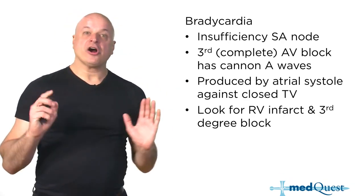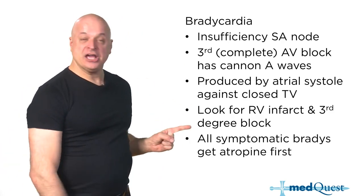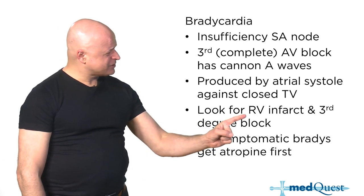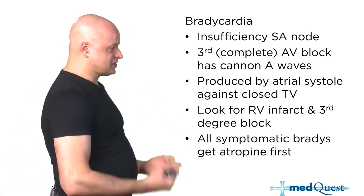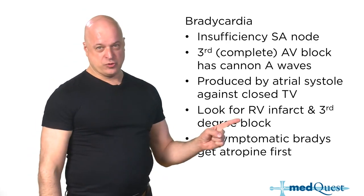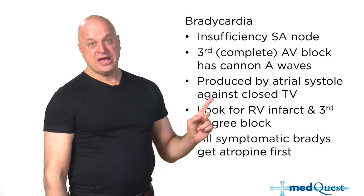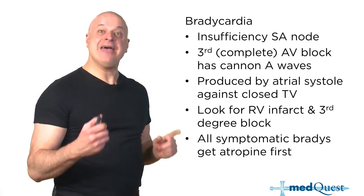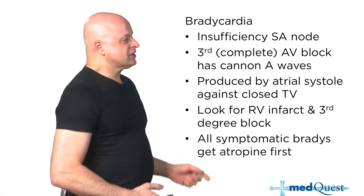Bradycardias are always treated with atropine if you're symptomatic. Why look for third degree AV block with RV infarction? Because they have the same arterial supply — the right coronary supplies the right ventricle, the AV node, and the inferior wall.